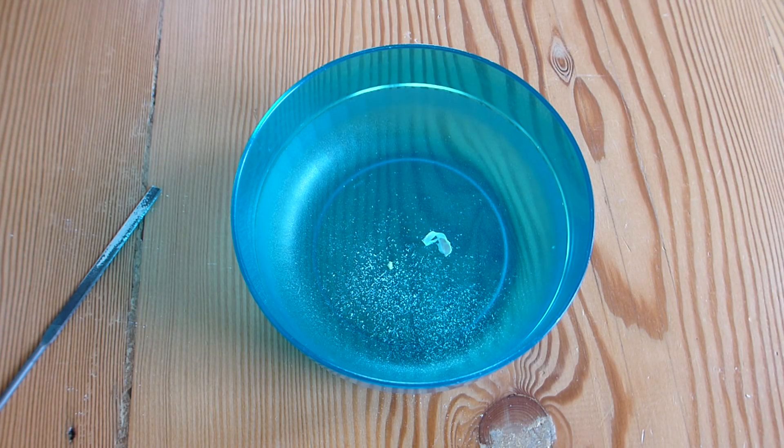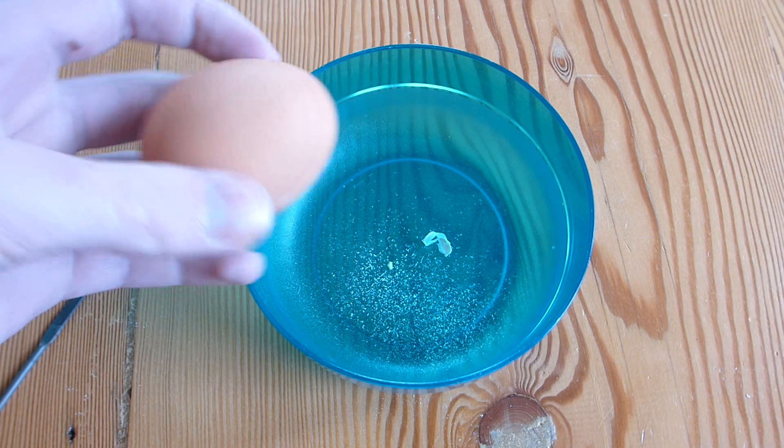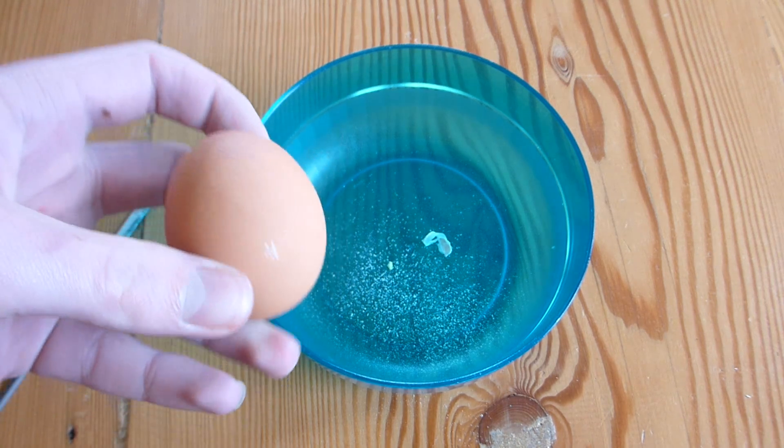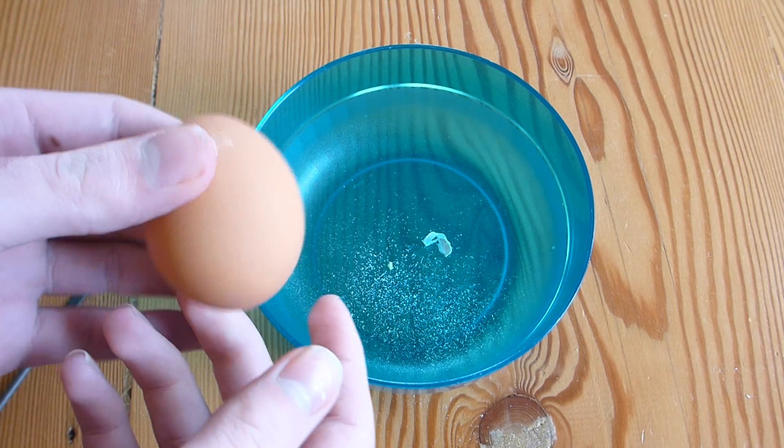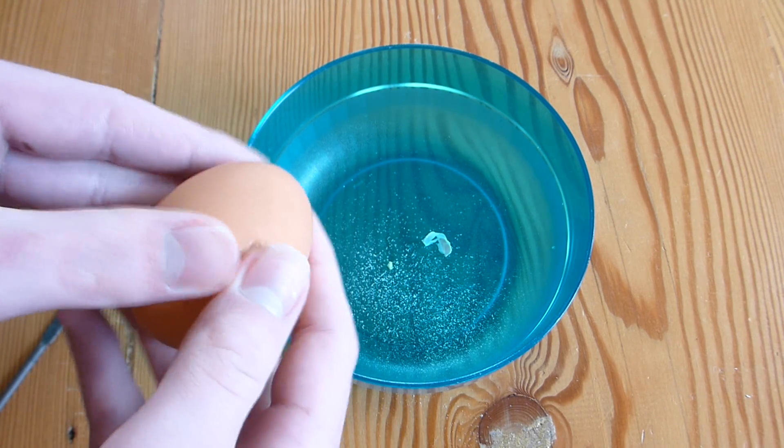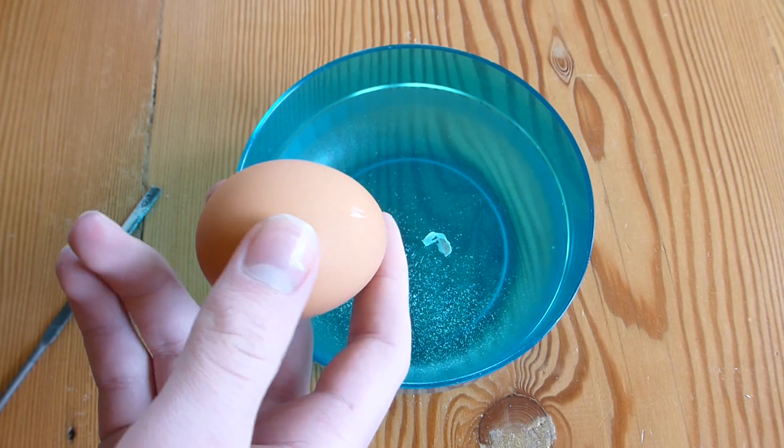Okay, so the first step is getting your egg shell. What you're going to need is one boiled egg, and it is very helpful if it's boiled because if it's raw you'll just make a complete mess all over the place when you break it in half.